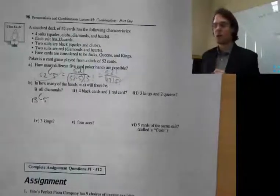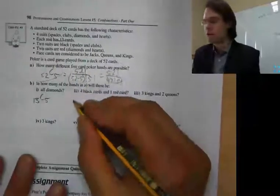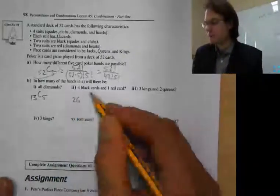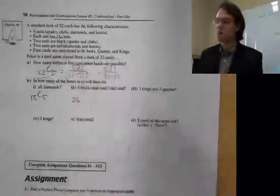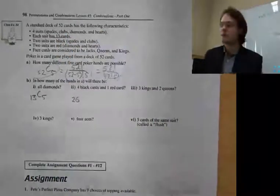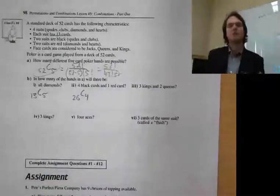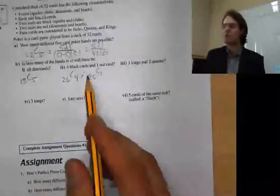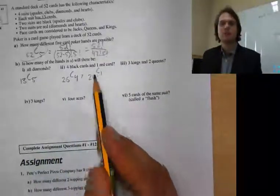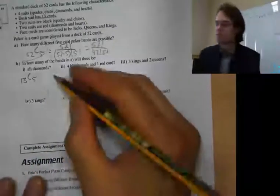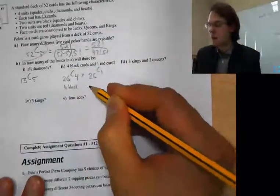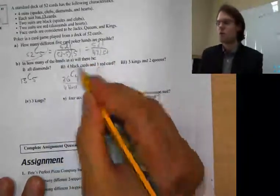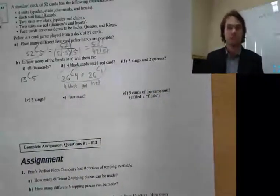Next: four black cards and one red card. Now it gets tricky — I can't just say 26 choose 5. There are 26 black cards, and we're choosing 4 of them. For red, there are also 26, and we choose 1. Notice the AND, which means multiply. So it's 26 choose 4 multiplied by 26 choose 1 — punch that in and multiply those together for your answer.